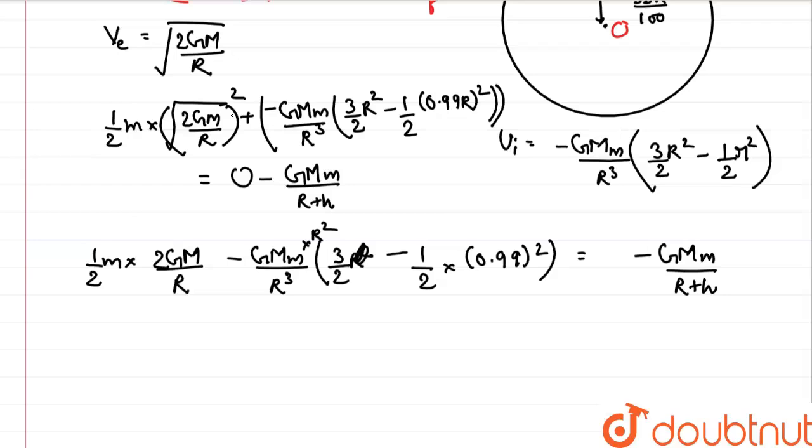As G capital M small m is common both sides, we can cancel that. 2 also gets canceled and r squared also cancels this r cube 2 times. We are left with 1 by r minus 1 by r into 3 by 2 minus 1 by 2 into 0.99 whole squared minus 1 upon r plus h.